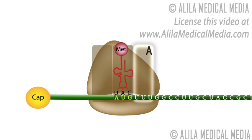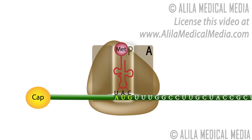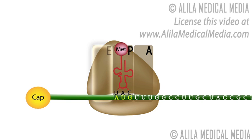The A site is the entry site for new tRNA charged with amino acid, or aminoacyl tRNA. The P site is occupied by peptidyl tRNA — the tRNA that carries the growing polypeptide chain. The E site is the exit site for tRNA after it is done delivering the amino acid. The initiator tRNA is positioned in the P site.